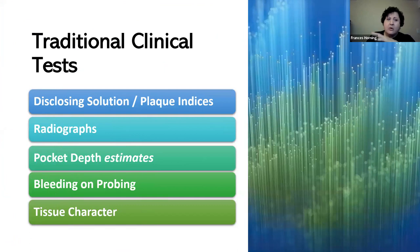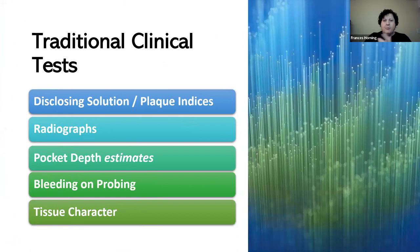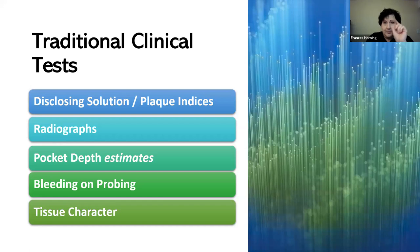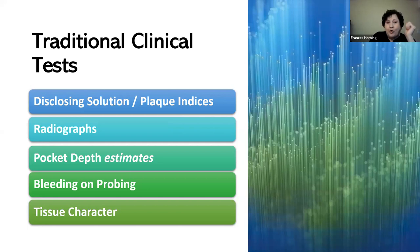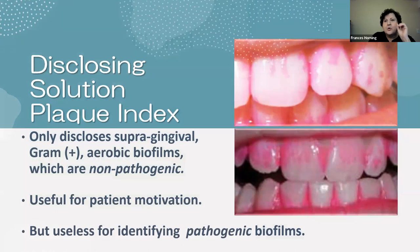Now, what are we currently using as diagnostic markers for periodontal disease? How are we deciding if a patient has perio or not? We're using disclosing solution, radiographs, pocket depth estimates — that's your periodontal probing — bleeding on probing, and tissue character. With disclosing solution, even with guided biofilm therapy using the Tooth Toner, you're staining supragingival plaque. That's not showing me what's subgingival.